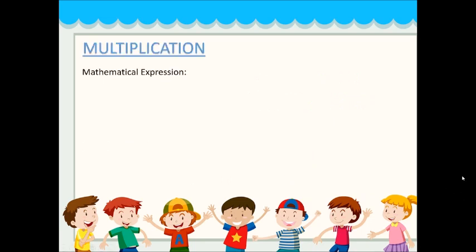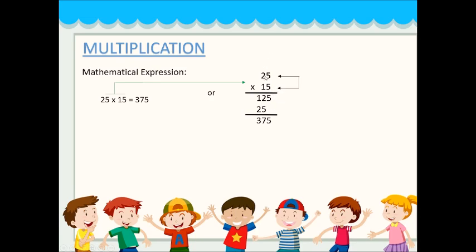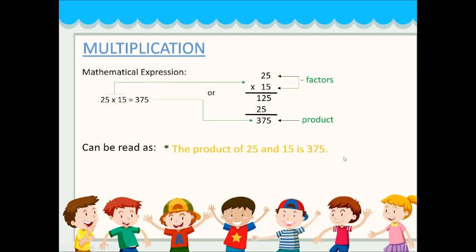Next is multiplication. The mathematical expression is written as 25 times 15 is equals to 375. You multiply: 5 times 5 is 25, write 5 carry 2; 5 times 2 is 10, plus 2 is 12; then 1 times 5 is 5 and 1 times 2 is 2. Adding these numbers gives 375. Where 25 and 15 are called the factors and the answer is called the product. This can be read as: the product of 25 and 15 is 375, or simply 25 times 15 is 375.